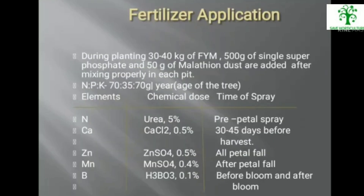During planting, 30–40 kg of FIM, 500 g of single super phosphate, and 50 g of malathion dust are added after mixing properly in each pit. The NPK ratio is 70:35:70 g per year. Key spray elements include: Nitrogen (urea 5%) as pre-petal spray; Calcium (CaCl₂ 0.5%) 30–45 days before harvest; Zinc (ZnSO₄ 0.5%) at petal fall; Manganese (MnSO₄ 0.4%) at petal fall; and Boron (H₃BO₃ 0.1%) before and after bloom.